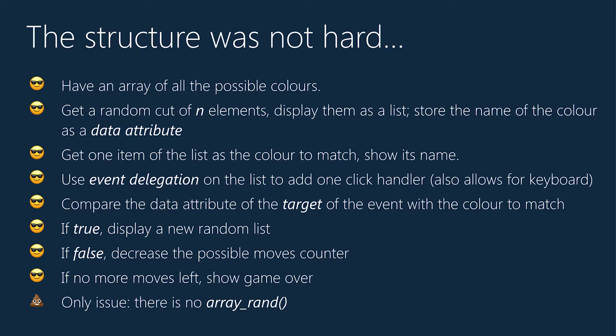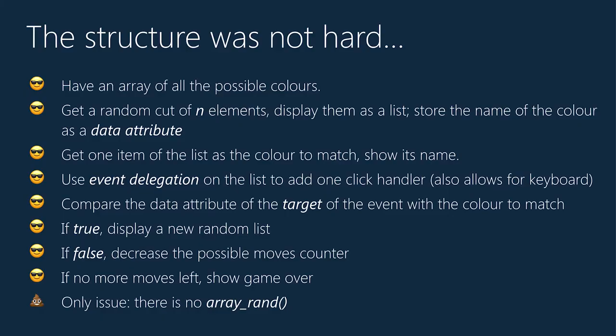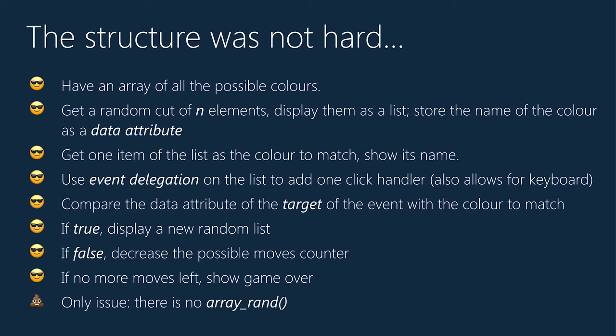The structure wasn't hard. I have an array of all possible colors. I get a random cut of N elements, display them as a list, and store the color name as a data attribute. I then pick one item as the color to match, show that name, and say "get this color." I use event delegation — one single event handler on the whole list of color badges — so I know which one was clicked. You don't need a separate event handler for every single li element, and that technique has been around since 2004 and people still don't use it.